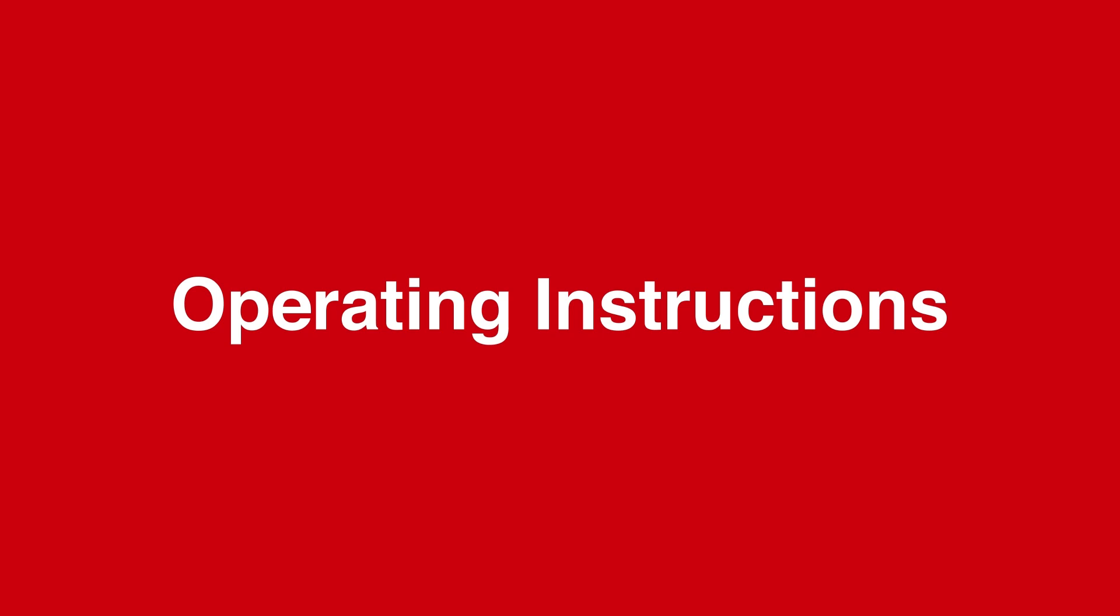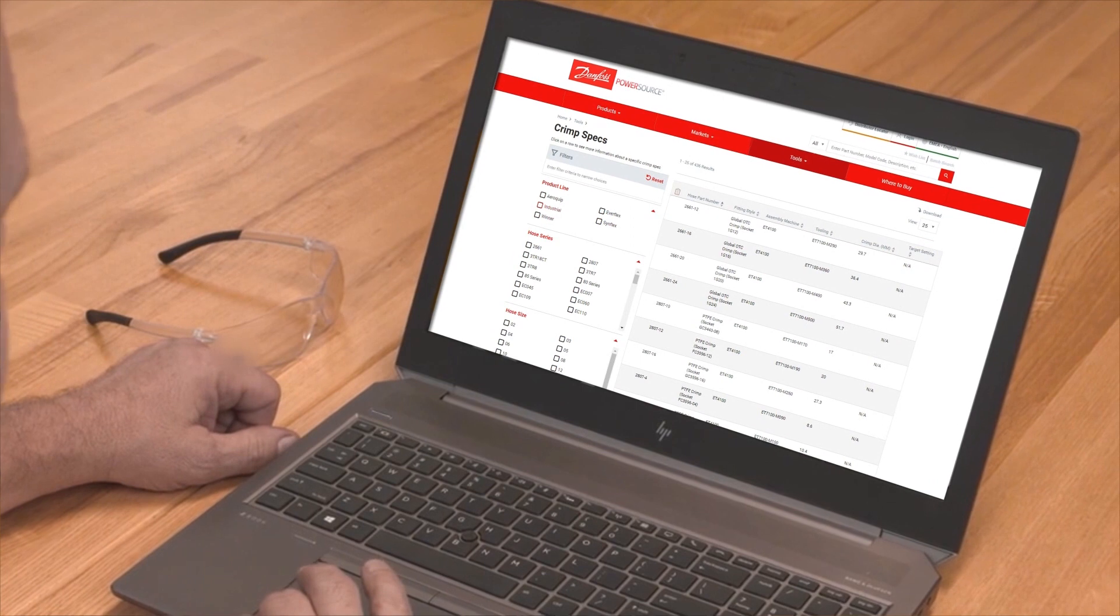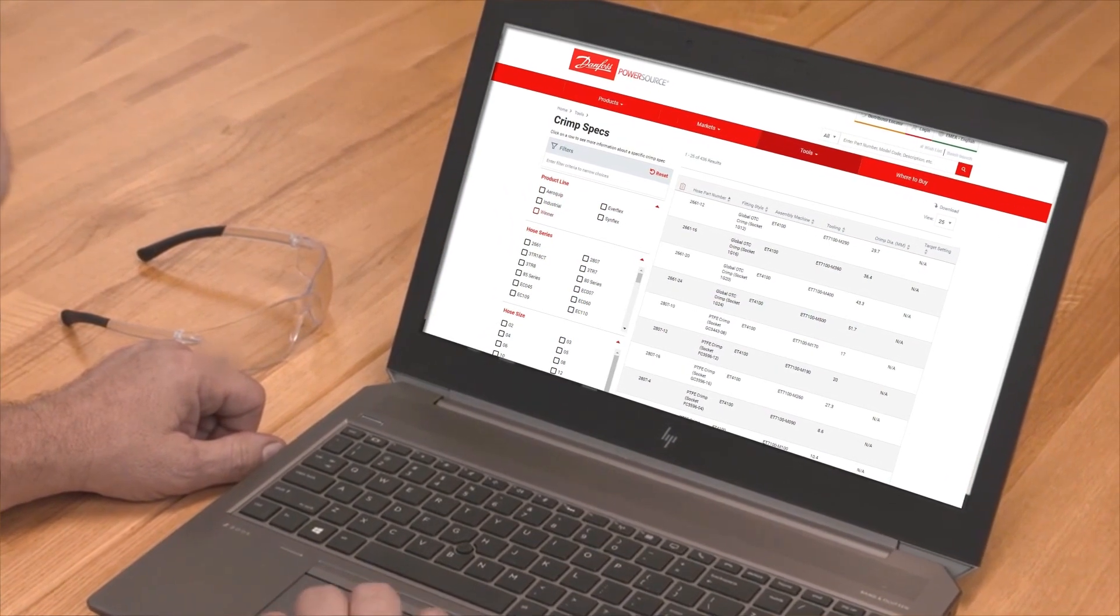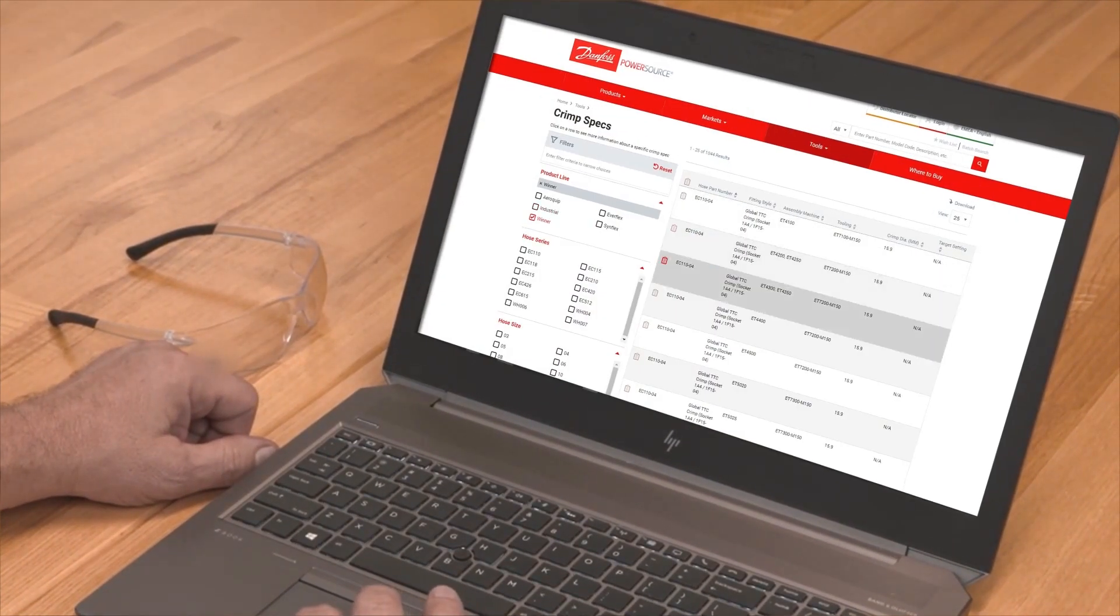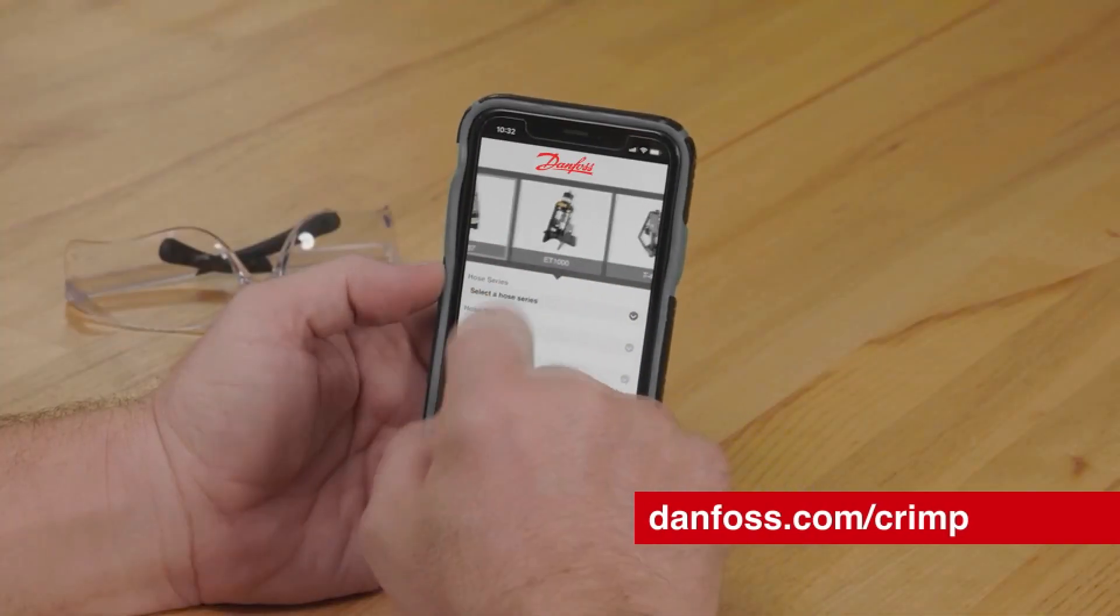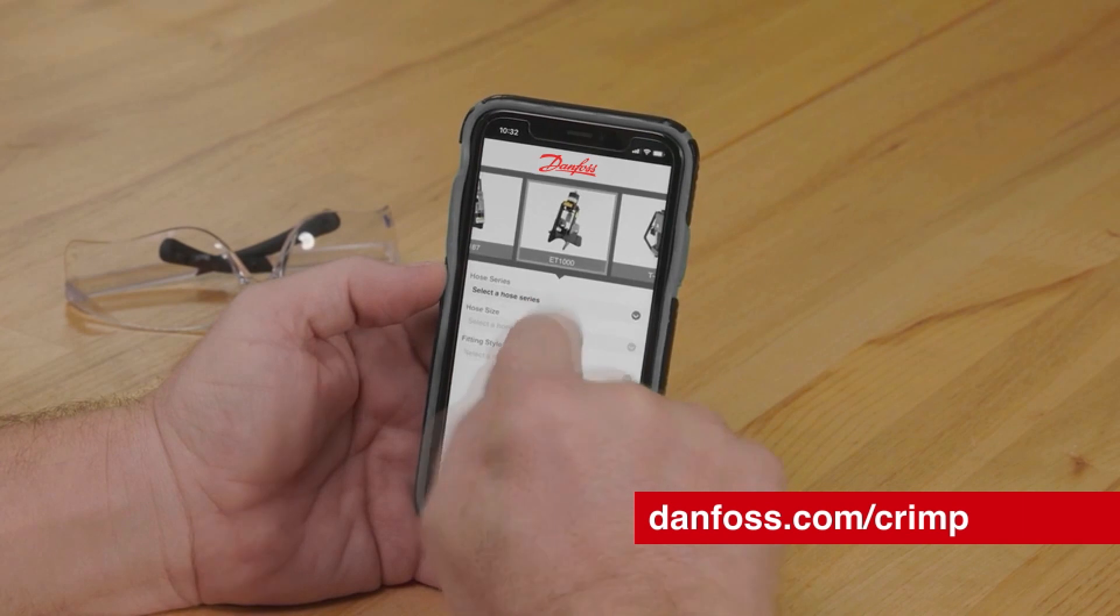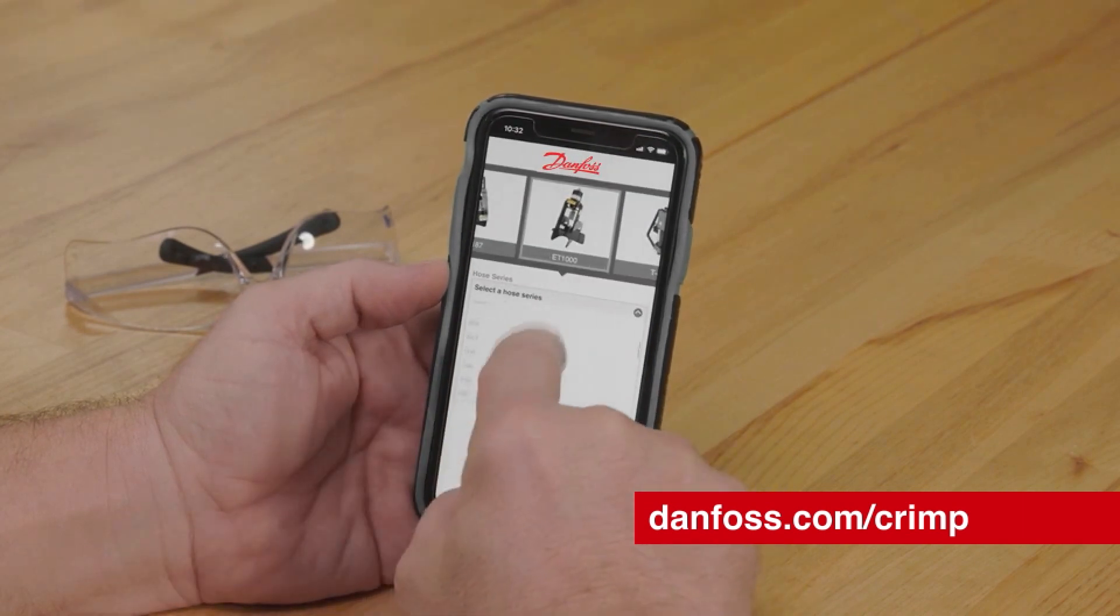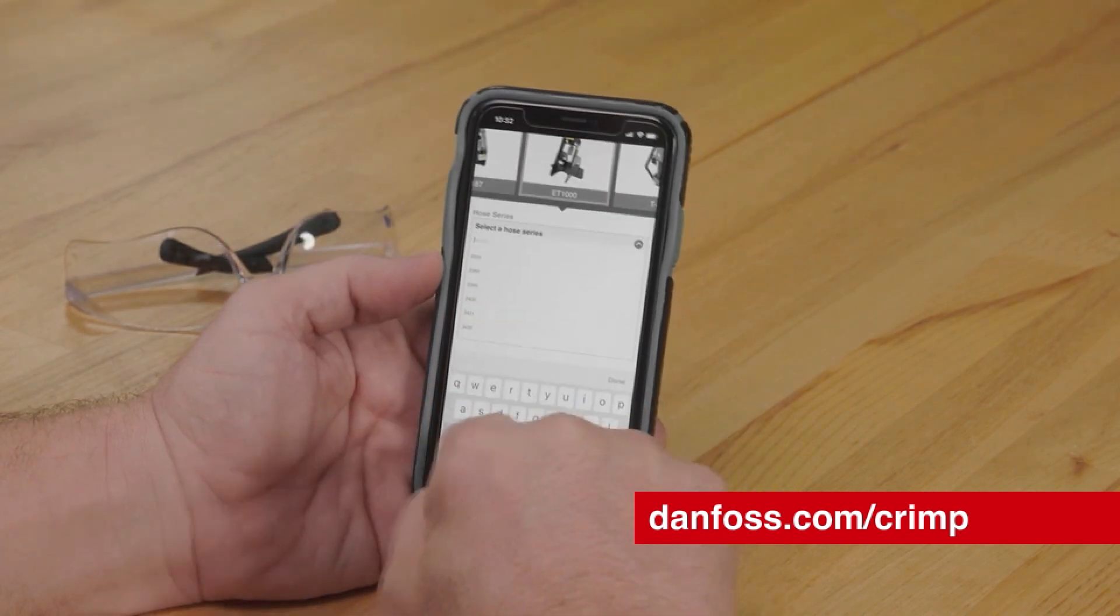To determine the crimp settings and tooling needed, access the Power Source crimp spec tool from the tools menu on Power Source. You can create a custom crimp chart in three simple steps. Another option is to visit Danfoss.com/crimp on your mobile device for quick and easy access to your crimp specs at any time.